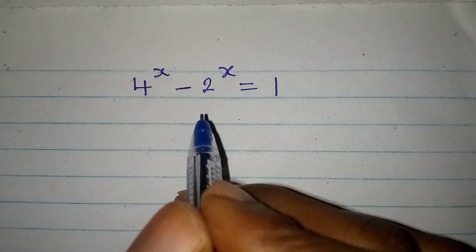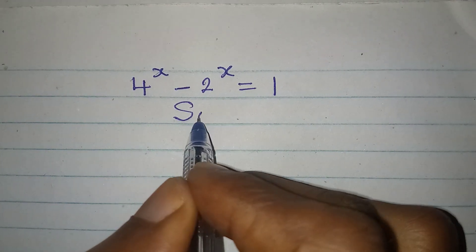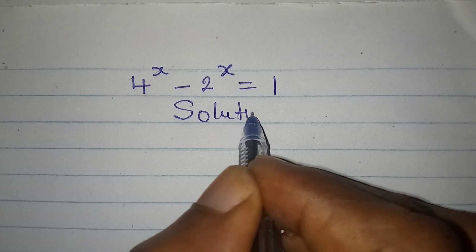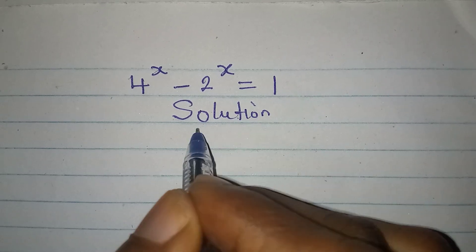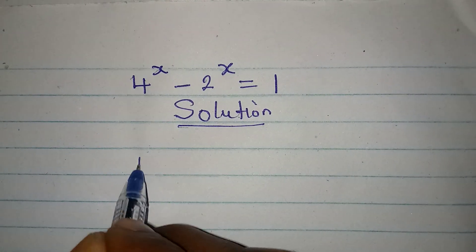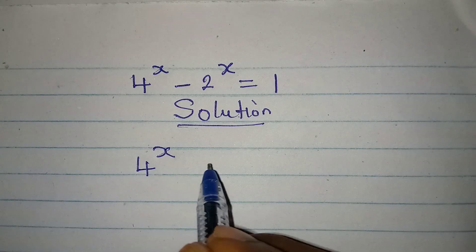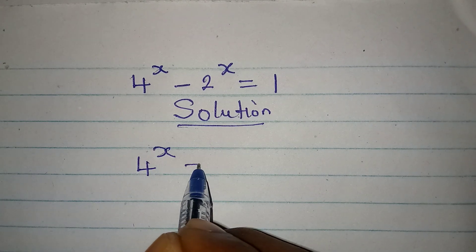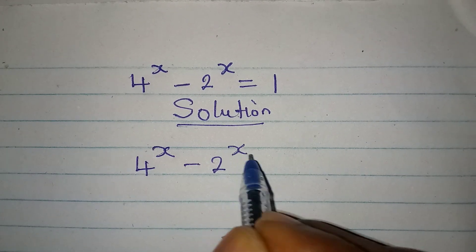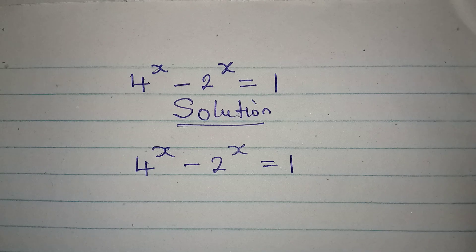Hello everyone, let's provide the solution to this problem: 4 to the power of x minus 2 to the power of x equals 1.